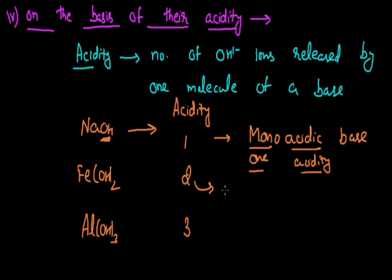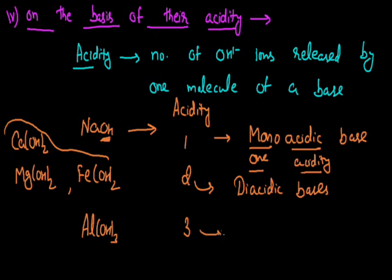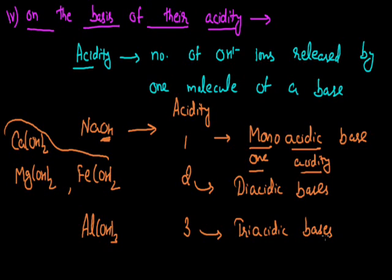If the acidity of any base is two — for example ferrous hydroxide, magnesium hydroxide Mg(OH)₂ commonly known as milk of magnesia, or slaked lime Ca(OH)₂ — all these bases contain two replaceable hydroxyl anions each, and they are termed as diacidic bases. Diacidic bases are those bases which have an acidity value of two. On the other hand, if the acidity value is three and the base contains three replaceable hydroxyl anions, it is termed as a triacidic base. Aluminium hydroxide is one example of a triacidic base.